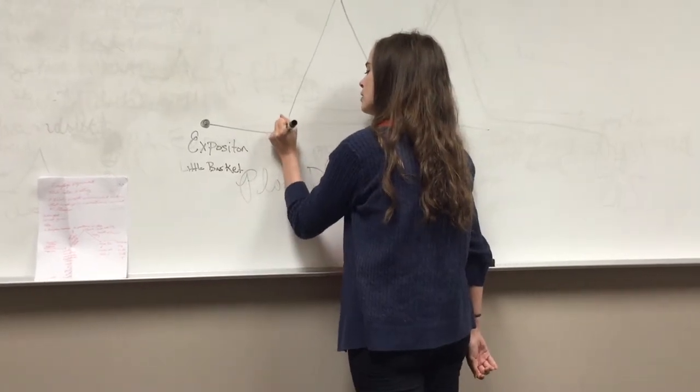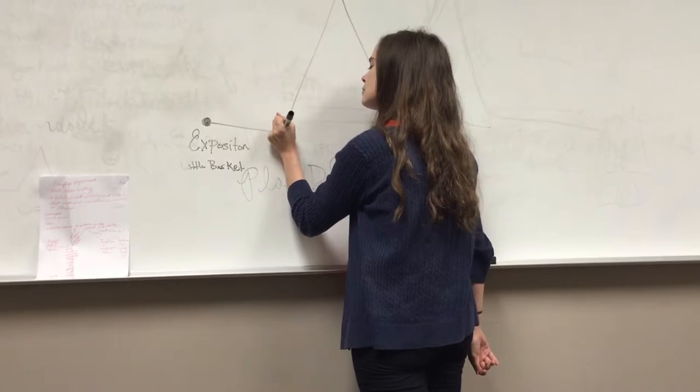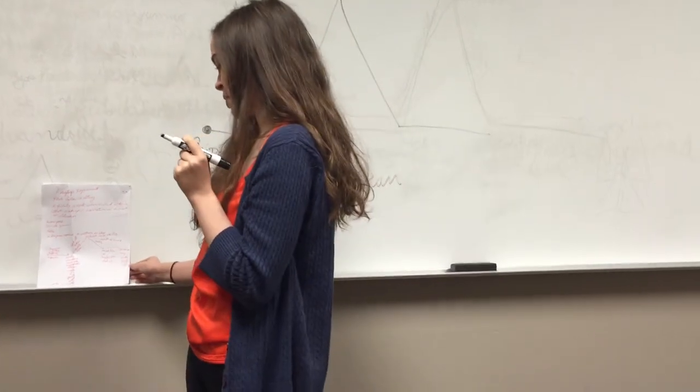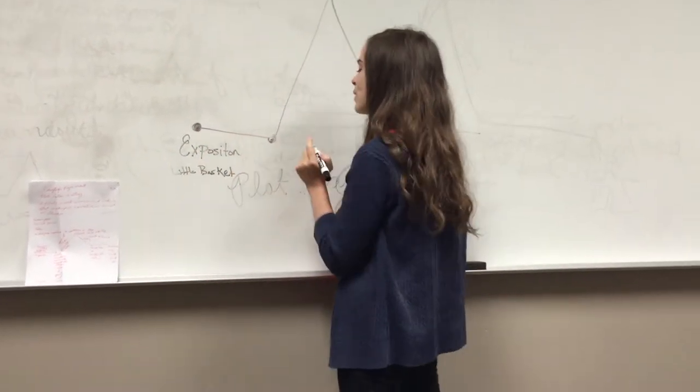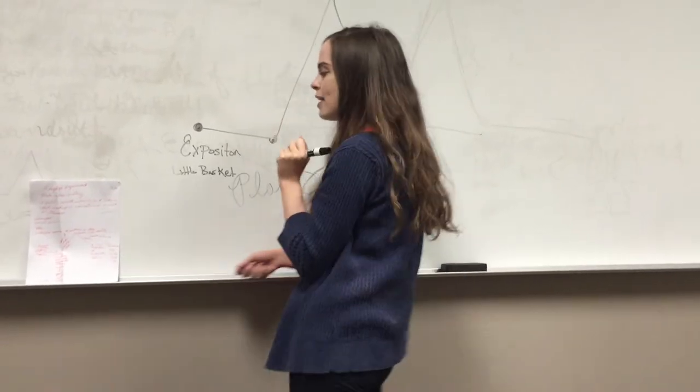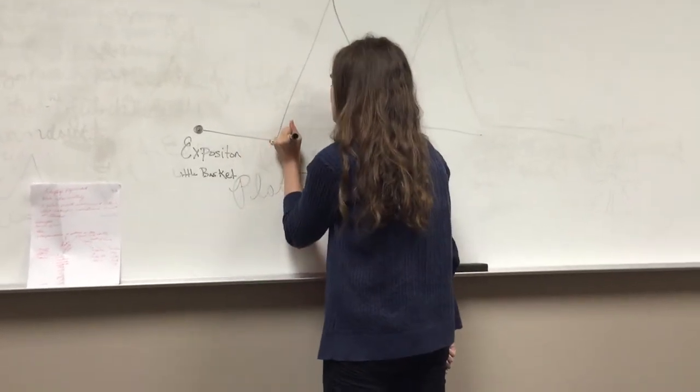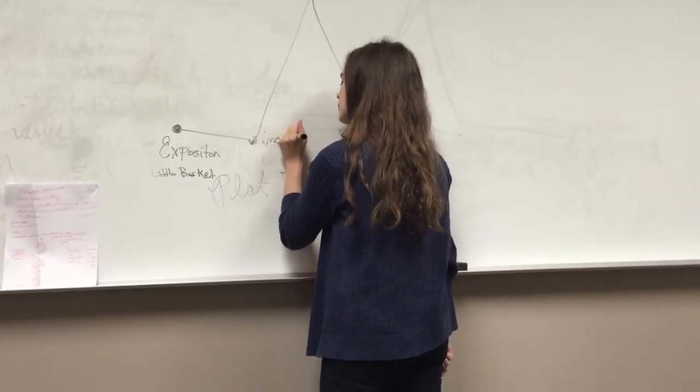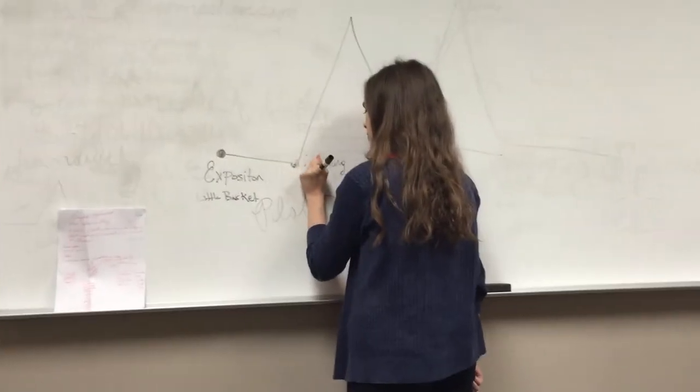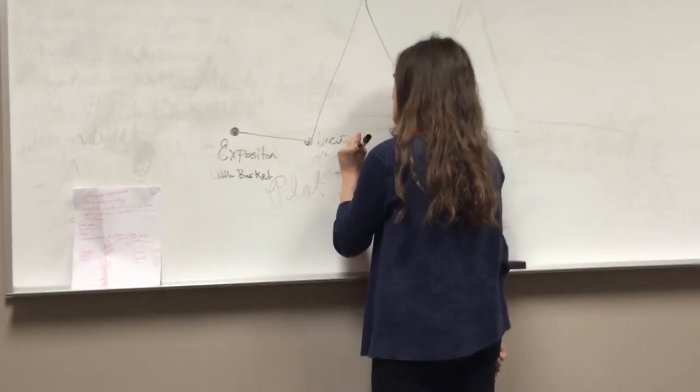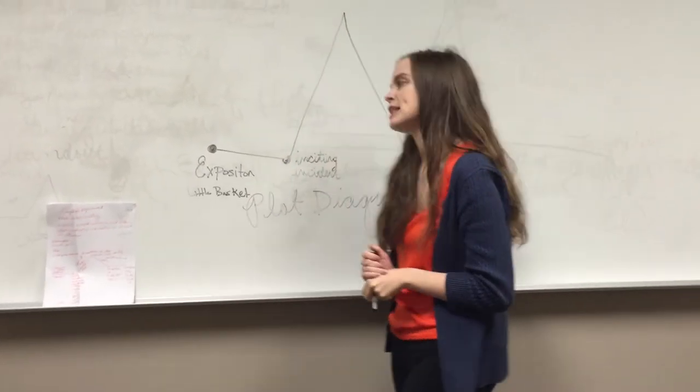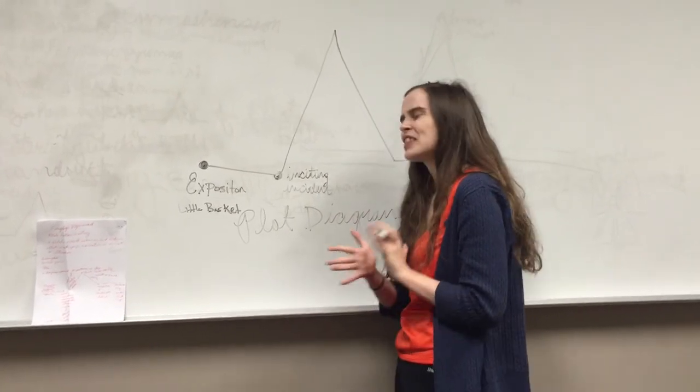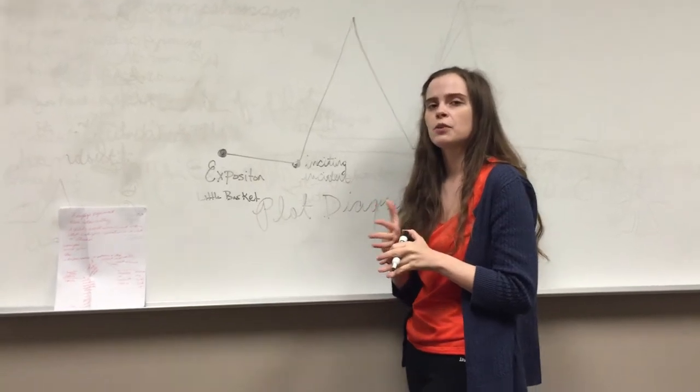Now, the next point in the story, does anybody know what this is called? That's okay. That's what we're here for. We're here to learn. The next point, it's called the inciting incident. Does anybody know what the inciting incident would be? It's the turning point in a story. Very good. So the inciting incident is, as you said, the turning point in a story sort of where we are introduced to a conflict. So what do you think this would be in the story of Little Red Riding Hood?